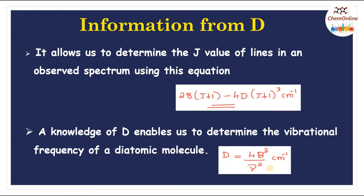In summary, for the non-rigid rotator model, the energy equation includes an additional centrifugal distortion term, and the frequency of transition is 2B(J+1) − 4D(J+1)³ cm⁻¹. The selection rule is the same as for a rigid diatomic molecule: ΔJ = ±1. The spectrum is similar, but with a relative lowering of energy levels compared to the rigid rotator.